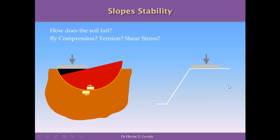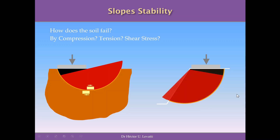You have a slope, and the self-weight of the slope or an additional load can increase until you develop this failure circular line. This produces the rotational mechanism that makes the slope fail because you reach on this failure line the maximum concentration of deformation and maximum value of stresses that are over the strength of the soil.